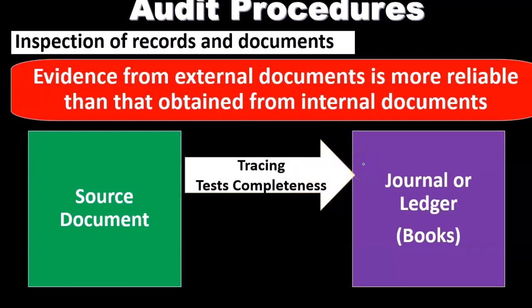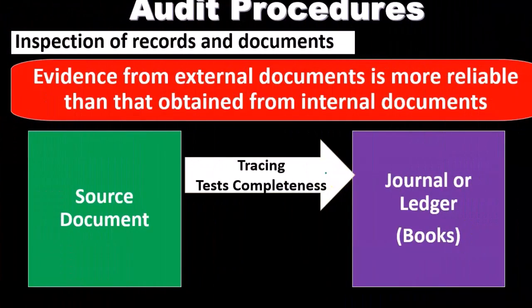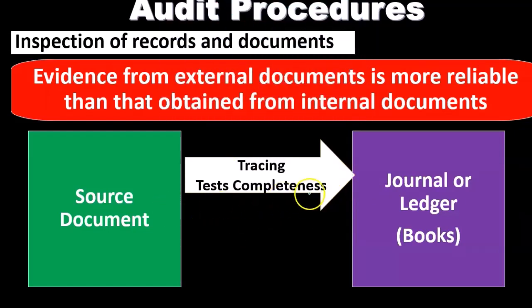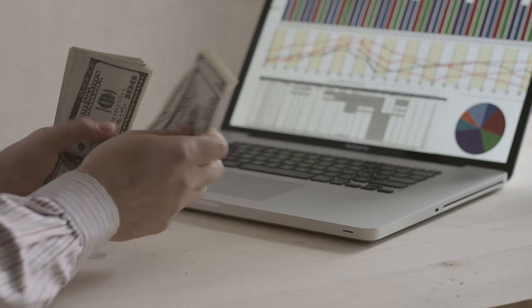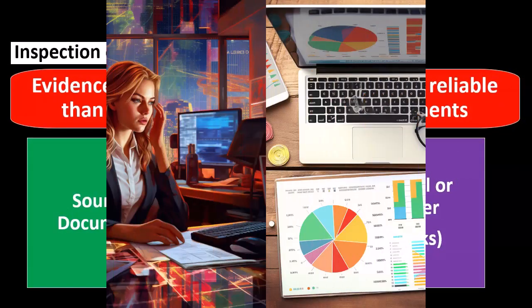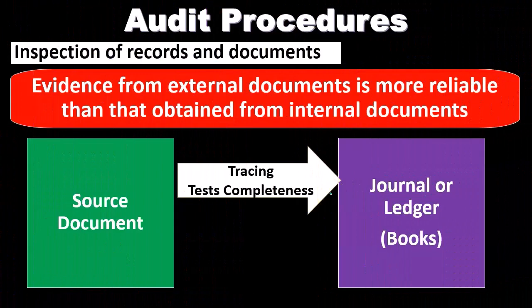To perform tracing, we might go to the client, randomly select invoices, and then trace those invoices to what we would expect the related journal entry to be on the books. We start with the source documents and trace them to what we see on the books. For an invoice, we'd expect to see revenue and possibly accounts receivable. When we do that, we're thinking about completeness — because if we have the source document, it should be in the books. If we can't find it in the books, something wasn't recorded, meaning the books may be incomplete.